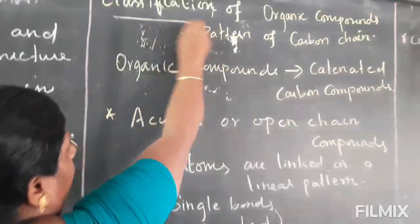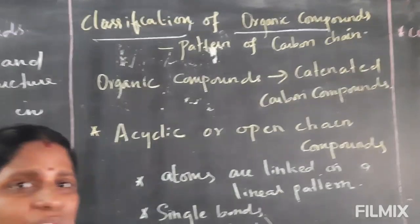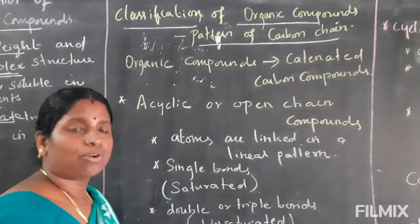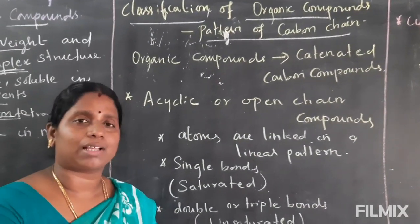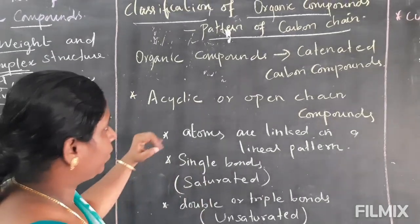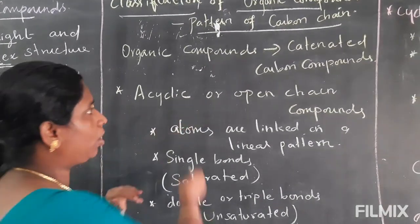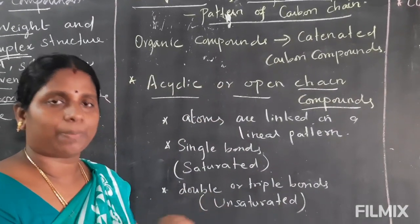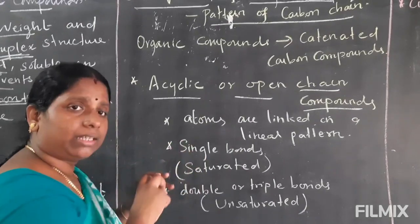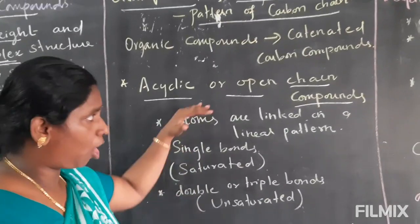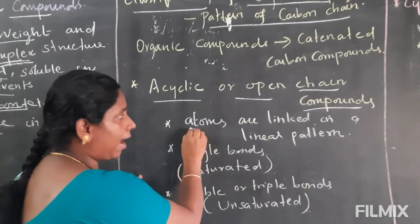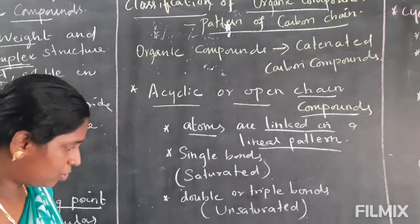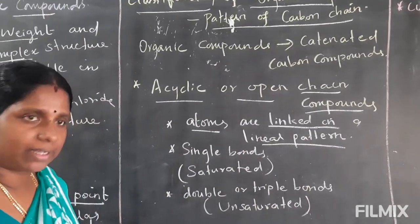Next: classification of organic compounds. How do you classify organic compounds? Using the pattern of the carbon chain. First type: acyclic or open chain. Acyclic or open chain means the carbon chain pattern is open type — atoms are linked in a linear pattern. For example, propane is in a linear pattern.